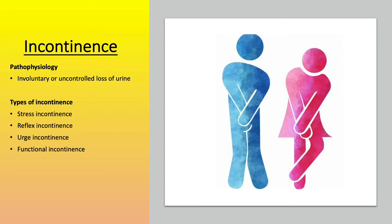Reflex incontinence refers to urine leaking out in response to nerve damage. Urge incontinence is a strong urge to urinate, and urine leakage is uncontrolled. Lastly, functional incontinence refers to the impaired ability to get to the restroom due to environmental factors or mobility limitations.